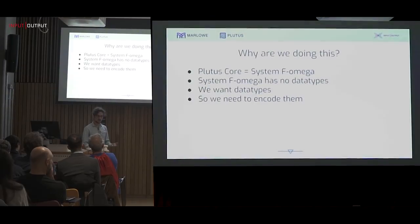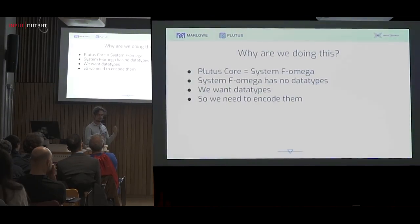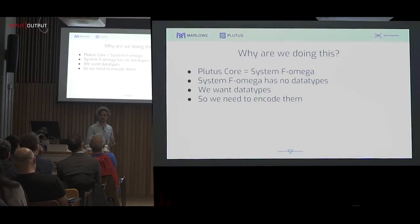System F Omega, as it is normally presented, does not have data types. So a quick reminder for those of you who maybe don't spend all of your time thinking about the lambda calculus, System F Omega is pretty much the simply typed lambda calculus with polymorphism and higher kinded types. This means that we can also have things like lists as well, which we want.